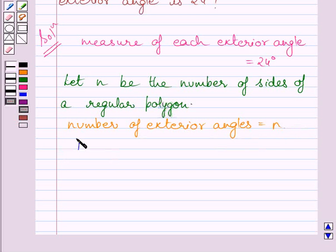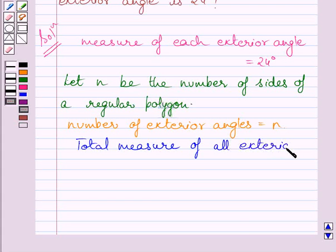Total measure of all exterior angles is given by product of number of exterior angles and measure of each exterior angle, that is N multiplied by 24 degrees.